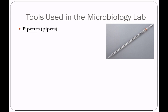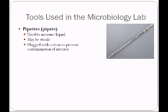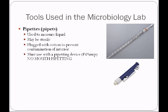We also use pipettes in the microbiology laboratory. These pipettes are going to be individually and sterilely wrapped. We use them to measure liquid. At one end you're going to find a cotton plug — this is going to prevent contamination of the interior. We have to use some type of suction, not from the mouth, to draw fluid up into the pipette. Having that piece of cotton there is going to prevent any microorganisms from the air from contaminating our liquid. We use a pipetting device called a pie pump — we never mouth pipette in the microbiology laboratory.